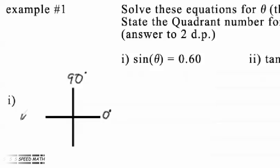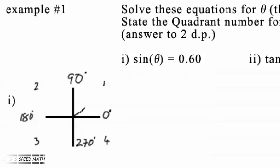For part 1, sine theta equals 0.60. The angle theta has a positive sine, so it lies as an acute angle in the first quadrant. But a positive sine also corresponds to an obtuse angle in the second quadrant. The supplementary angle — the one which when added to the obtuse angle makes 180 degrees — is the mirror of our acute angle in the y-axis.